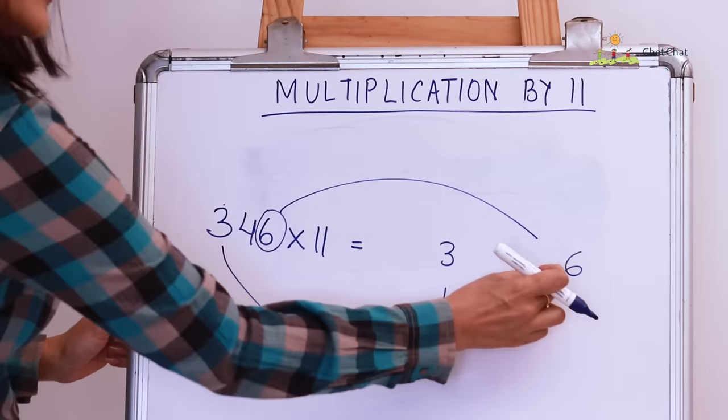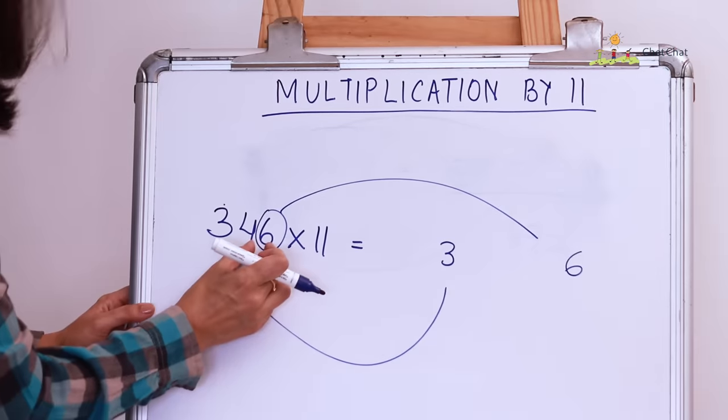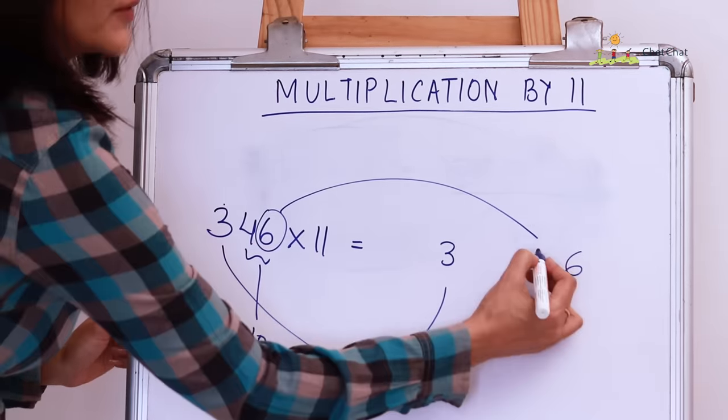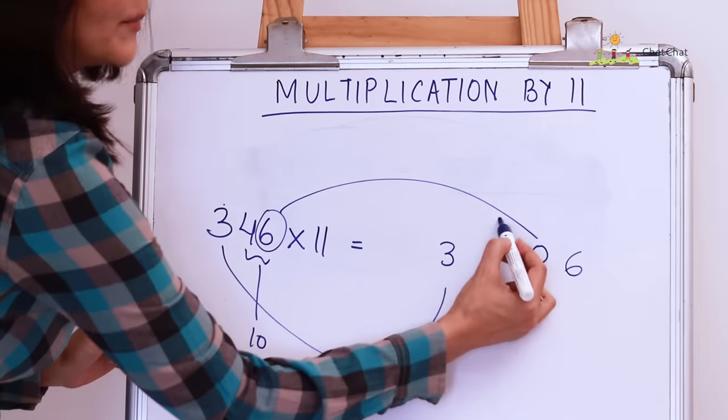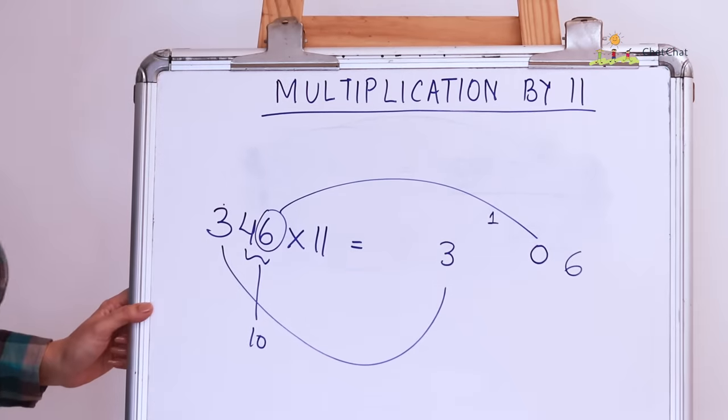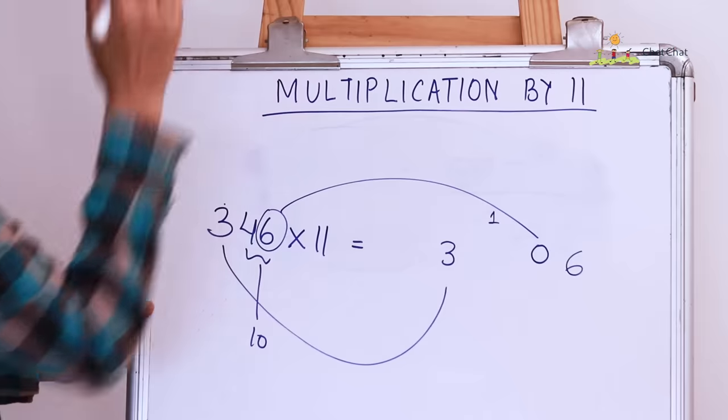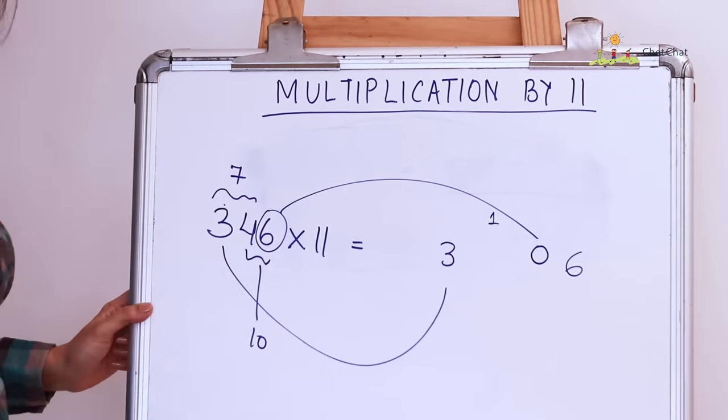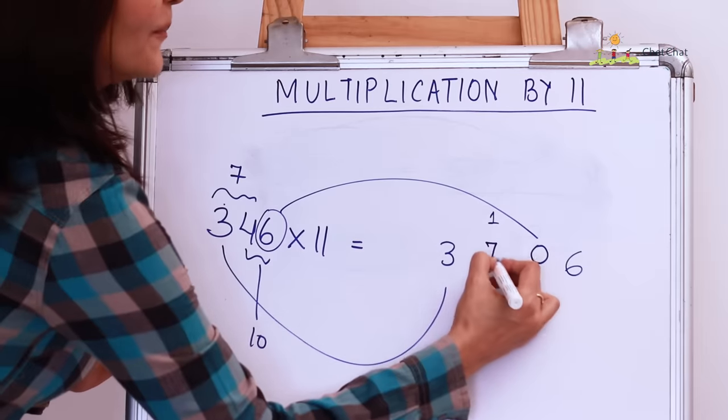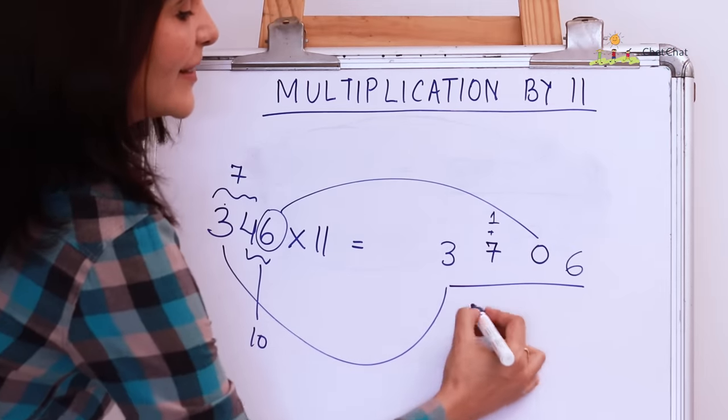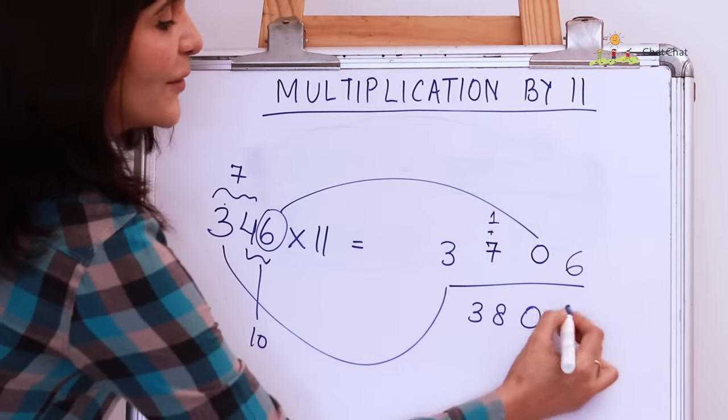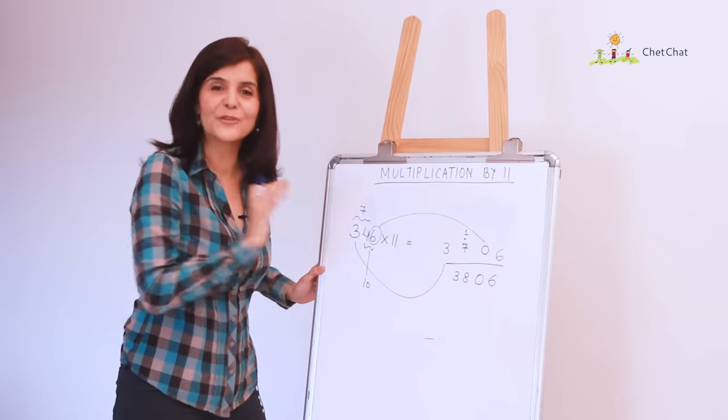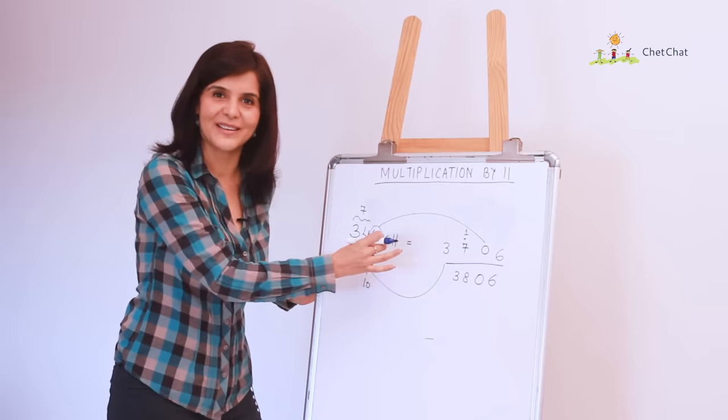The first digit is 3. Now, the number here is the sum of these two digits, which is 10. So, I put a 0 here and I keep the 1 for carry forward. And the number here is the sum of these two digits, which is 7. And so, the answer is 3, 8, 0, 6.